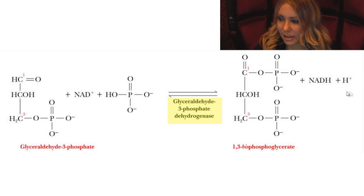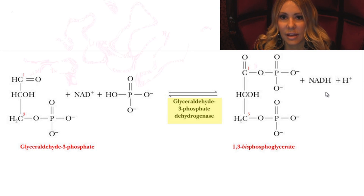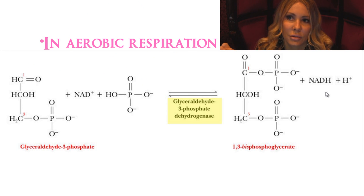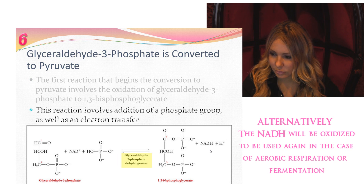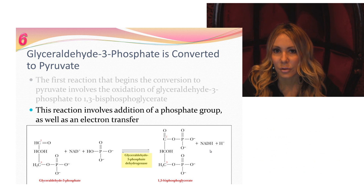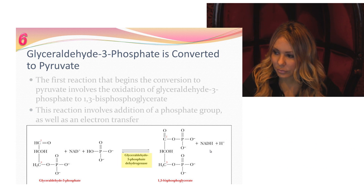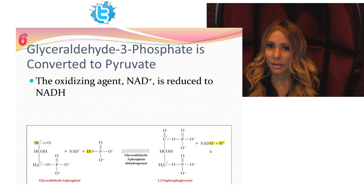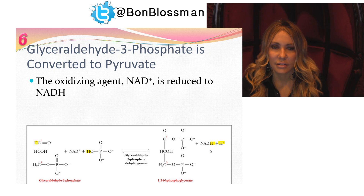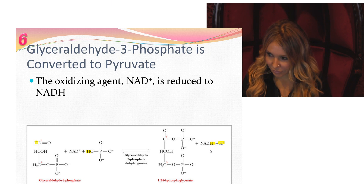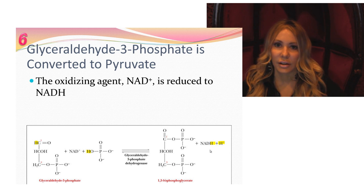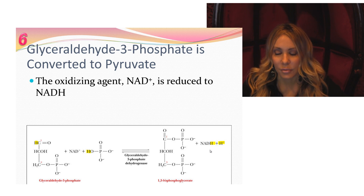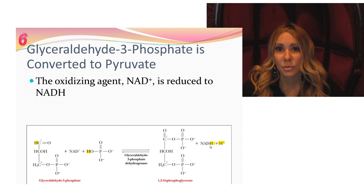We produce NADH + H⁺ — a reduced electron carrier that can find its way to the mitochondria via a shuttle system to deliver those electrons to the electron transport chain. The oxidizing agent is NAD+. NAD is niacin-derived — niacin is vitamin B3, a B-vitamin derivative — as is FAD, the other electron carrier, which is a vitamin B2 derivative of riboflavin. NAD+ picks up two electrons, bonds with a hydrogen, and we have a hydrogen ion released.